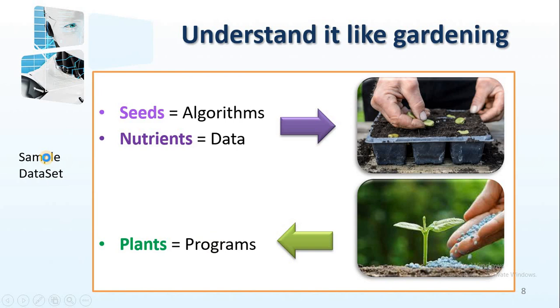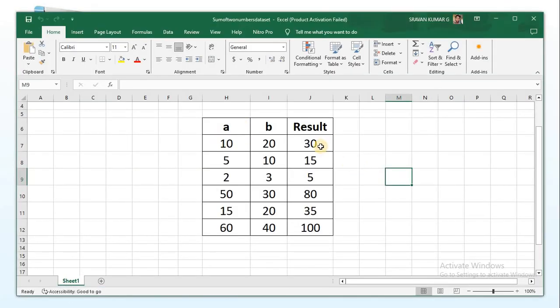Let me show you a sample data set. Data set is nothing but a set of data. See now, this is a data set which is in the form of Excel. We have three columns. Generally, we use the word fields, three fields. First field A, second field B, third field result. So we are giving this as an input and one algorithm.